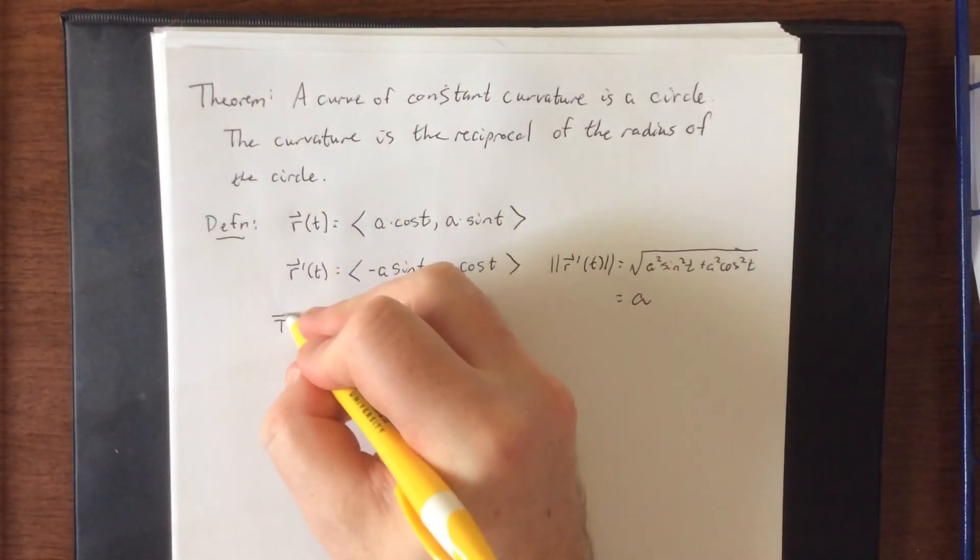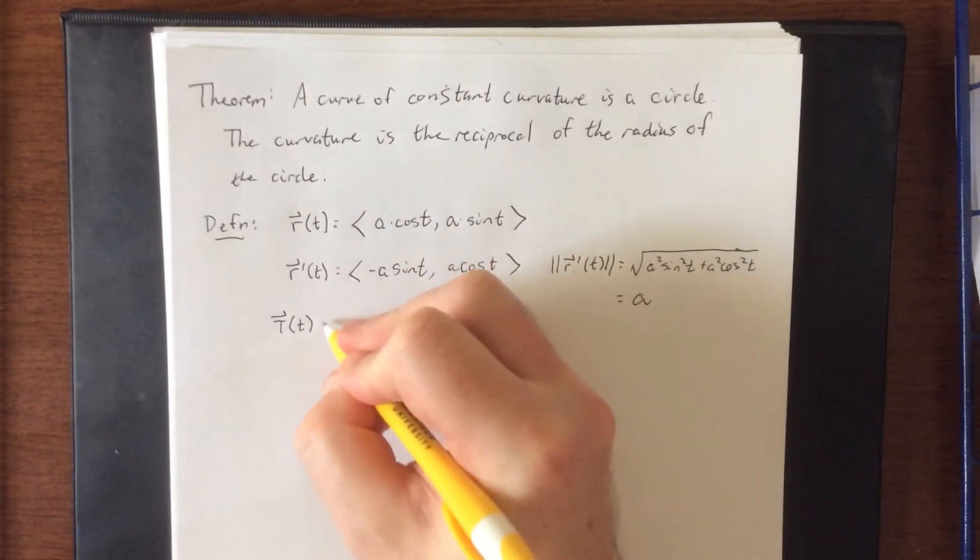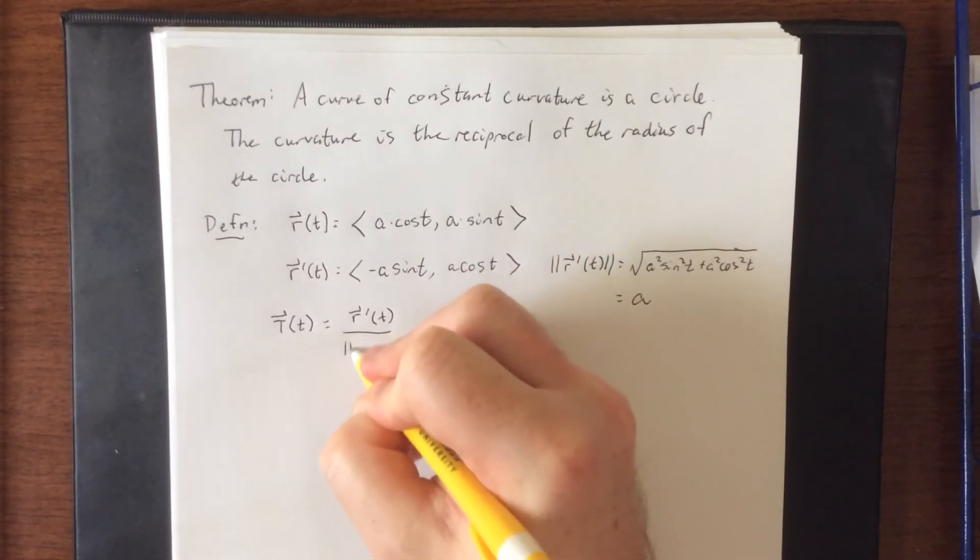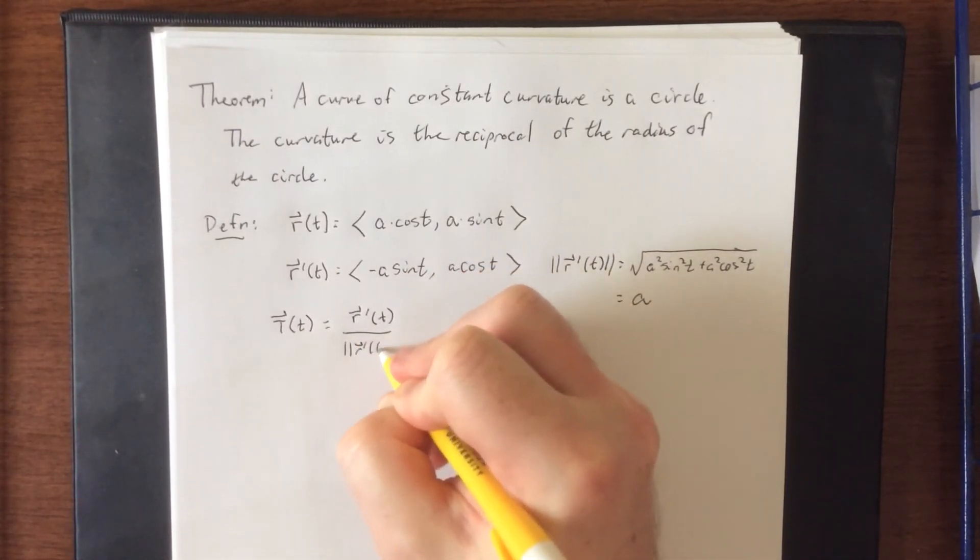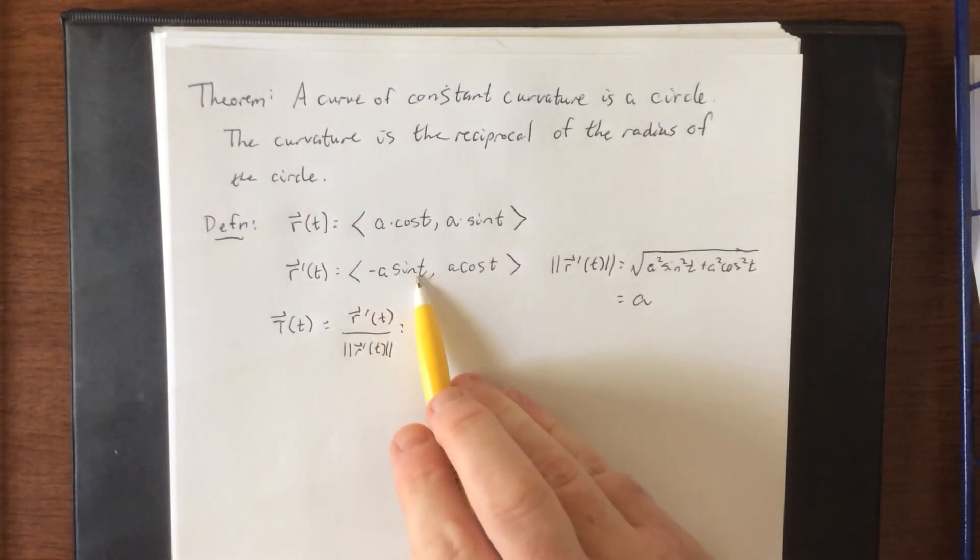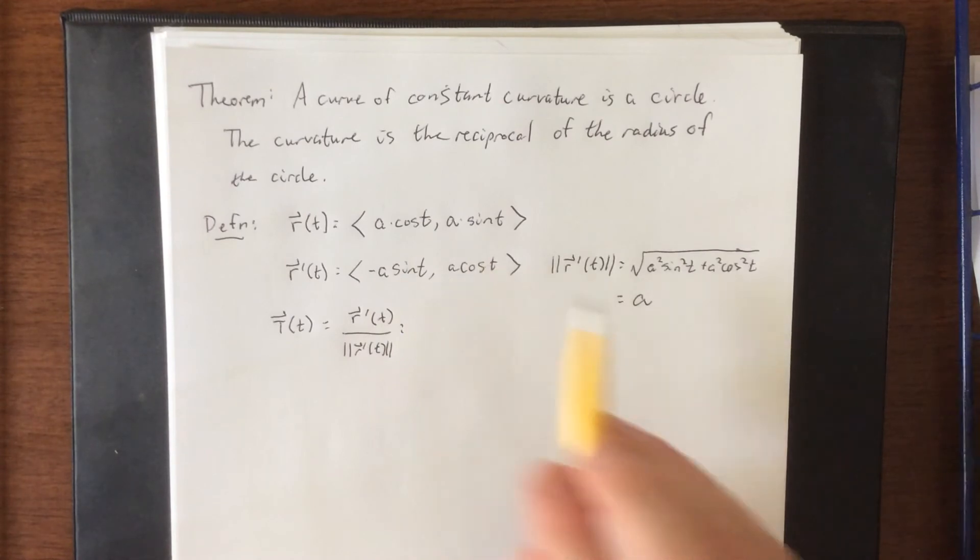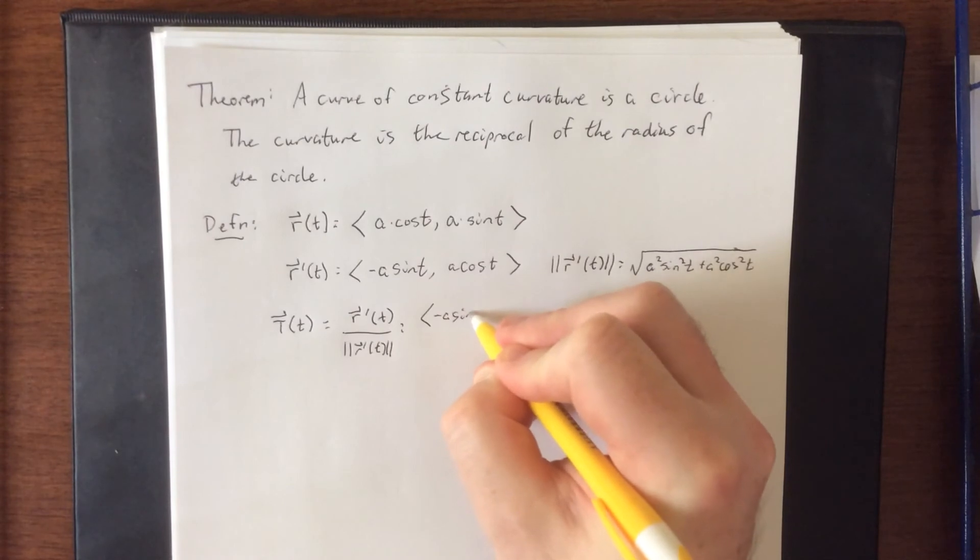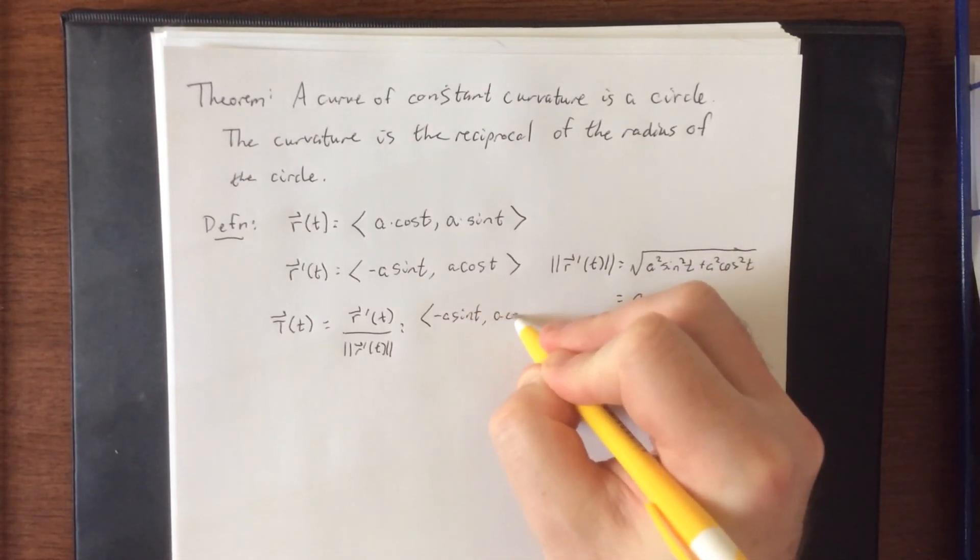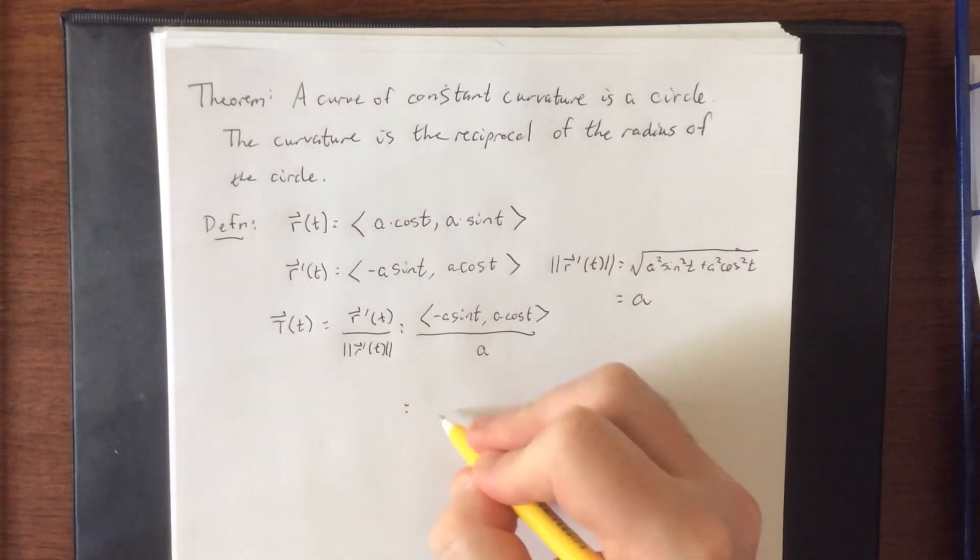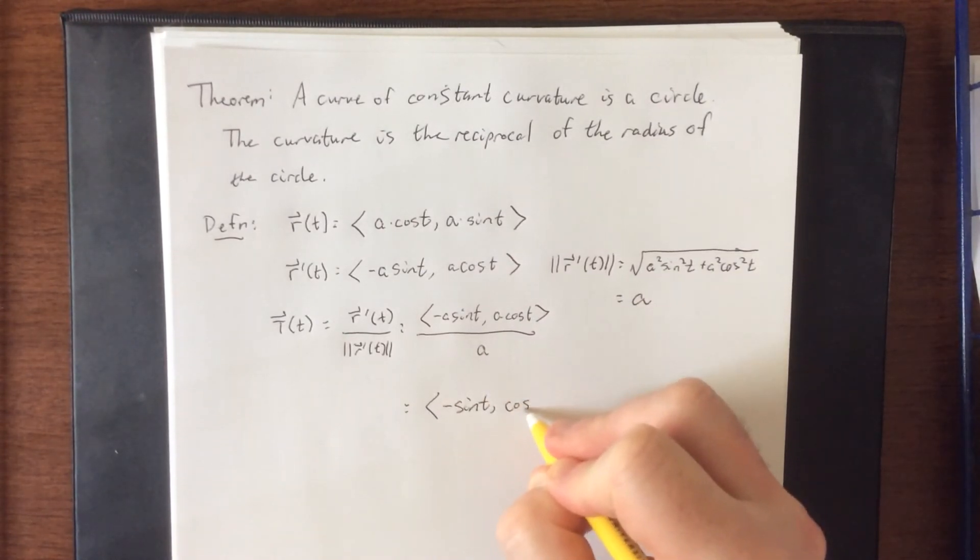On a related note, in order for us to get our unit tangent vector, we're going to need to take the derivative that we just got and divide by the magnitude of the same derivative. We're going to take negative a sine t, a cosine t, and divide both of those by a. We're going to wind up with the vector function negative sine of t, comma, cosine of t.